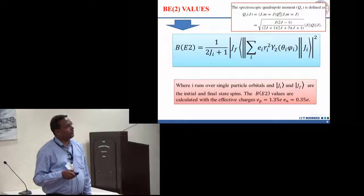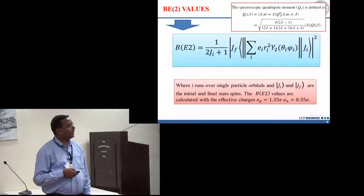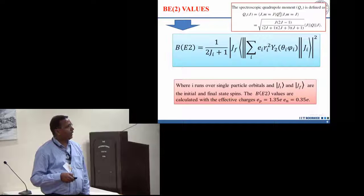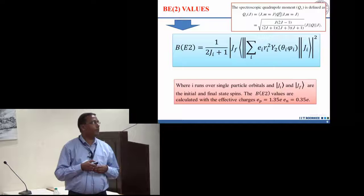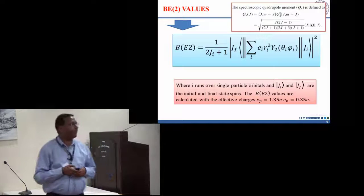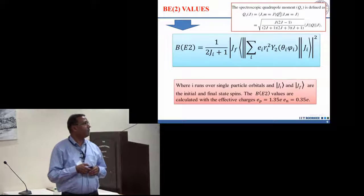For B2 value, we need the initial wave function and then final, so it is possible to calculate B2 and we need the effective charge for this. After this, we have also calculated the quadrupole moment using the wave function which are originally from ab initio interactions.